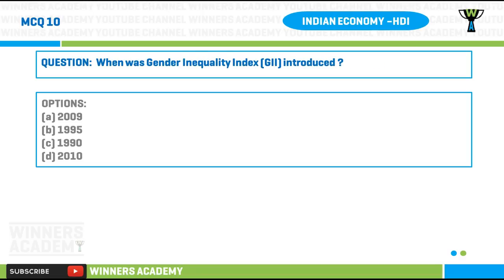Question number ten: when was the Gender Inequality Index (GII) introduced? Option A) 2009, option B) 1995, option C) 1990, option D) 2010.